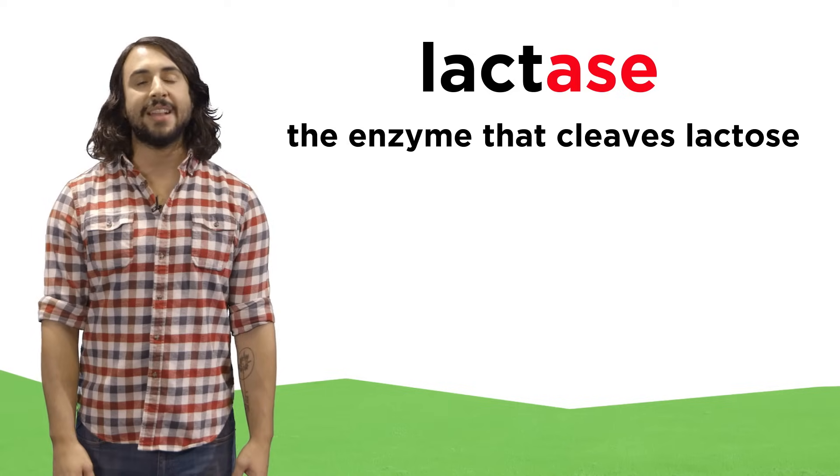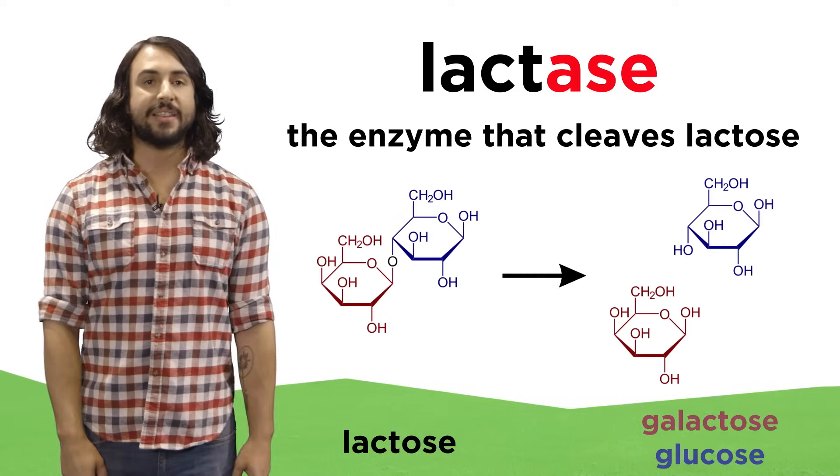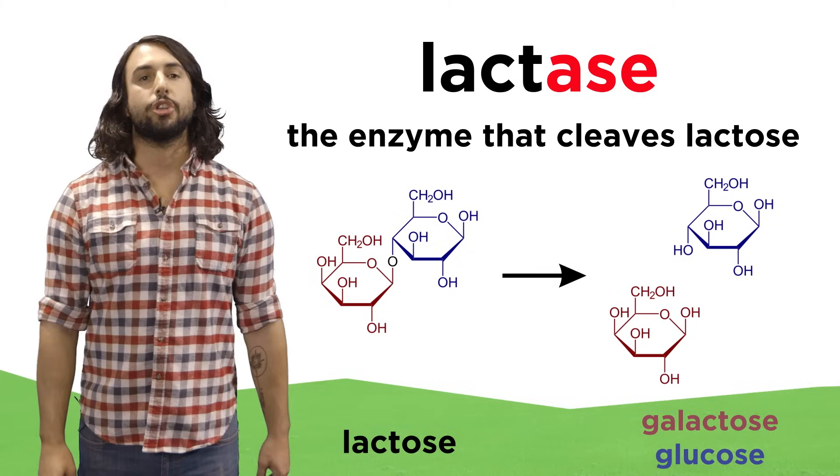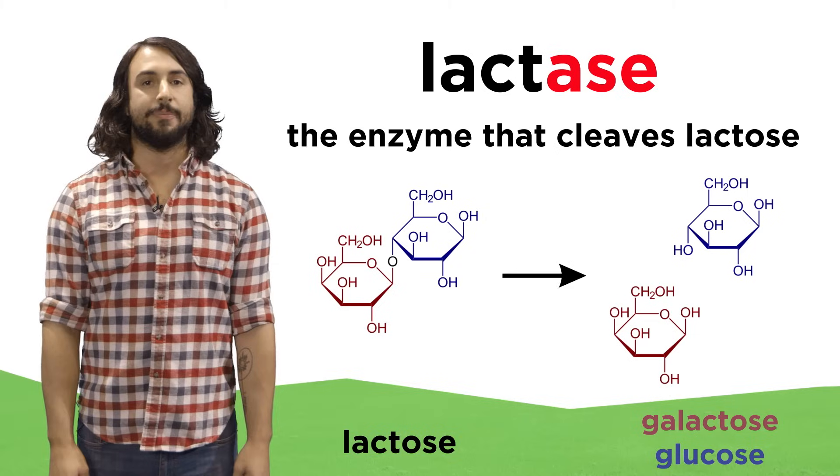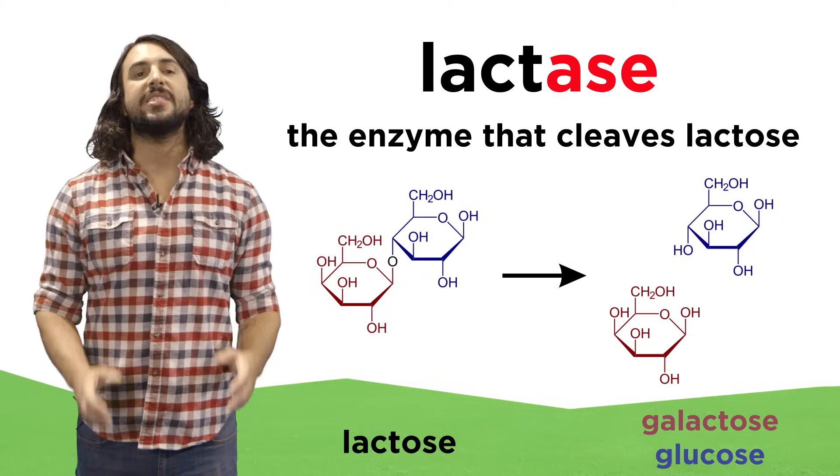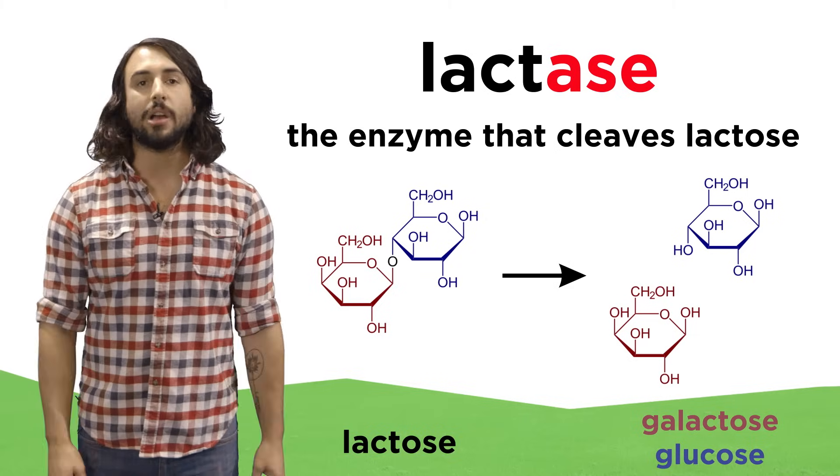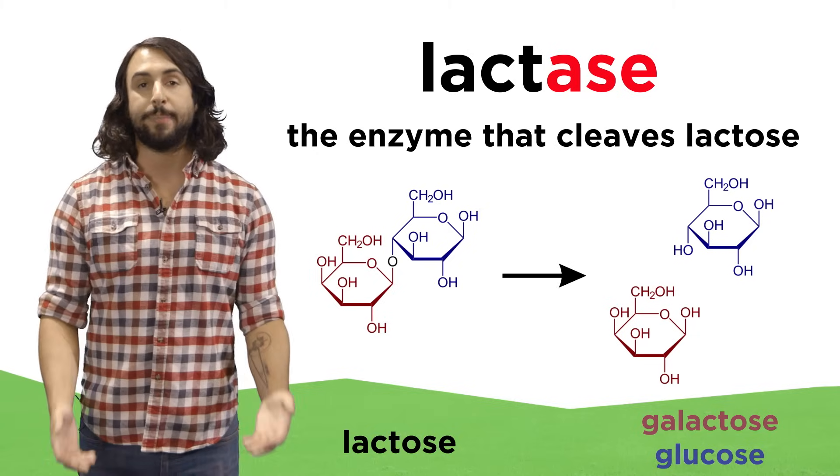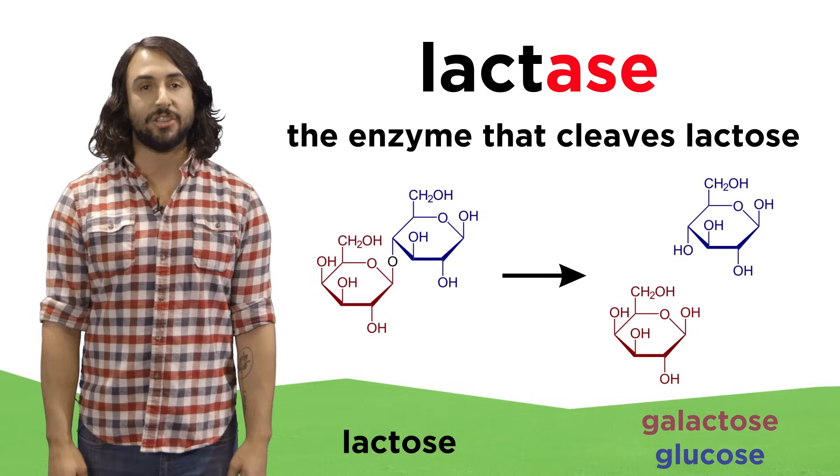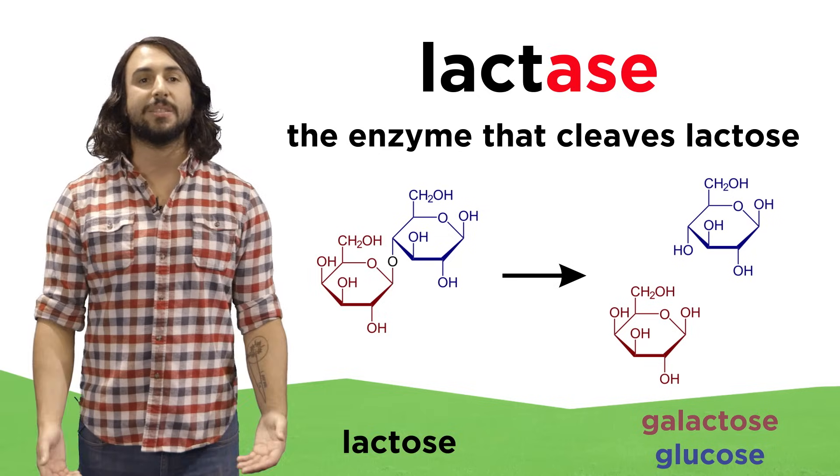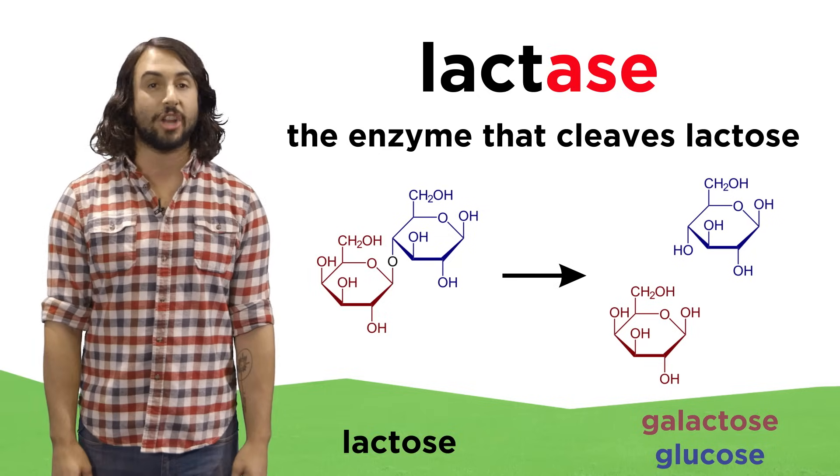For example, the enzyme lactase breaks down lactose, the sugar found in milk, into two smaller sugars. We will learn about these types of molecules next. It is a deficiency in lactase that causes lactose intolerance in some people, because without enough of this enzyme, it is very difficult to digest lactose, as nothing is present to break it down once ingested.